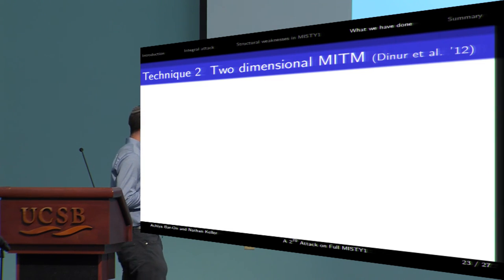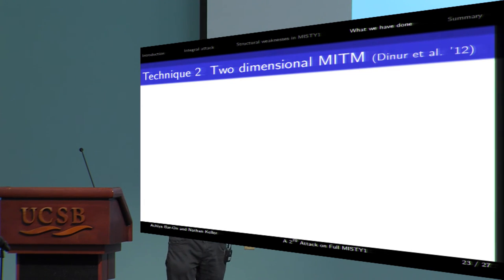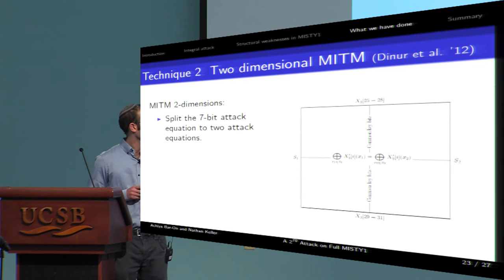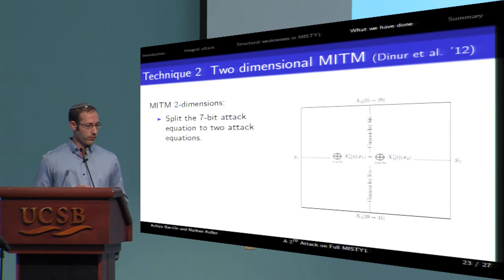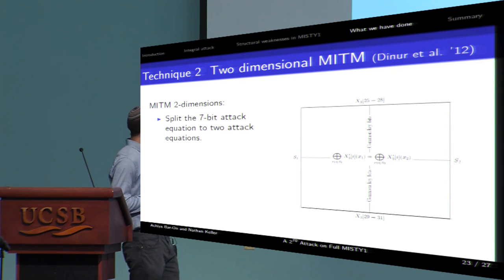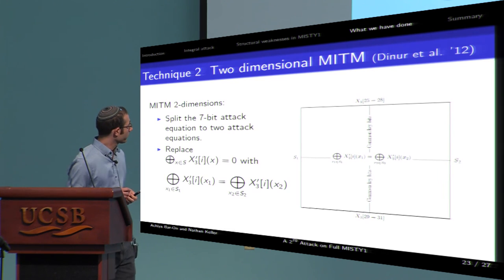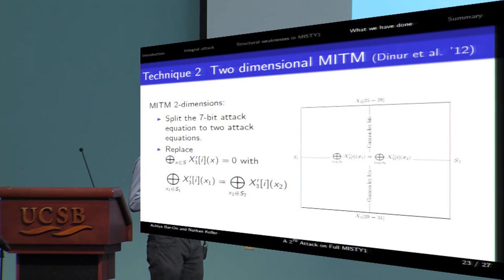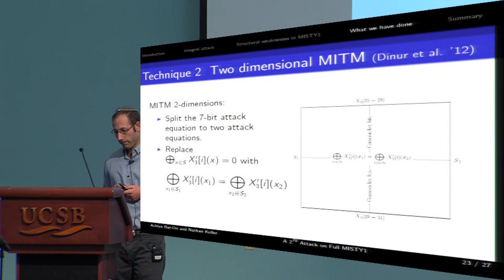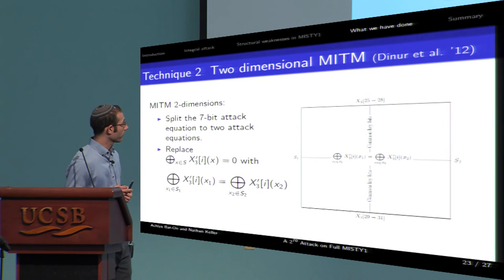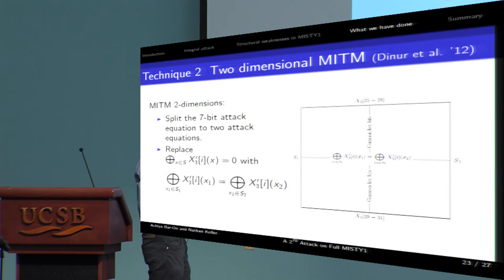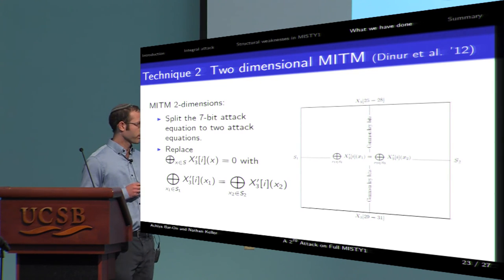A second technique is two-dimensional meet in the middle. First presented by Dinur et al. in 2012. We perform a meet in the middle attack twice. One, we split the seven-bit attack equation to two equations. A three-bit equation and a four-bit equation. And compare their common key bits. And second, we modify each equation separately. Instead of checking if a sum of values equals zero, we split the sum of values to two groups. And check whether the sum over one group equals the sum over the second group.